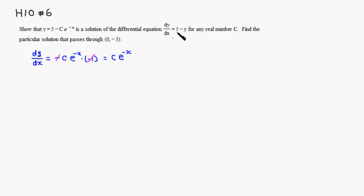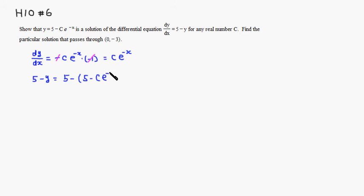This is the left-hand side of the equation. Now let's look at 5 minus y. That is equal to 5, and then subtracting y, which is 5 minus c times e to the negative x. You can see that the 5 minus 5 cancels out. The negative sign times a negative sign gives a positive sign, so this gives you c times e to the negative x.